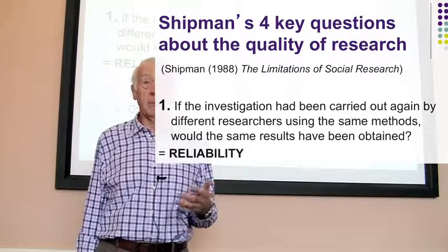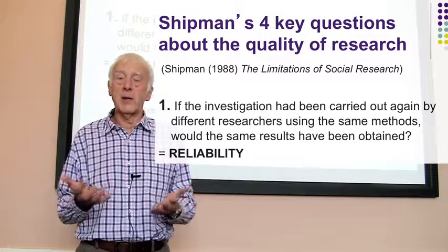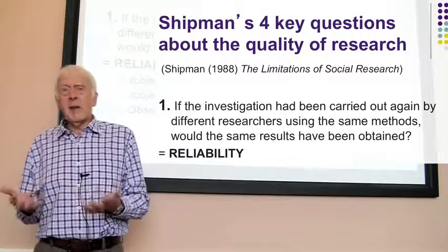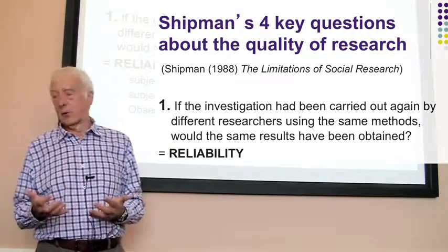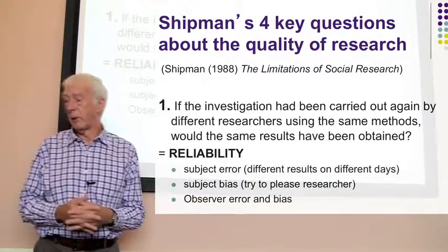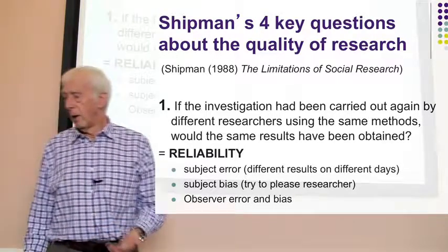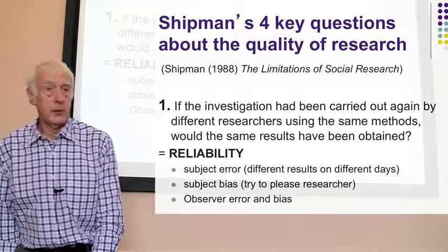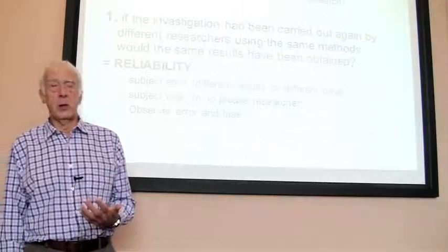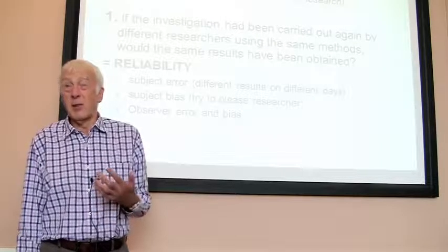It's important to recognise that reliability is different from validity. Something can be perfectly valid — doing the right things — but unreliable if it gets different answers each time. Here are three different ways that can happen, the first being what's called subject error: the idea of getting different results on different days.